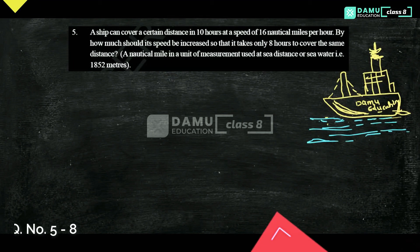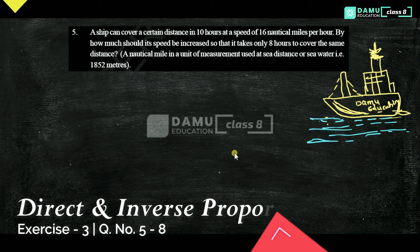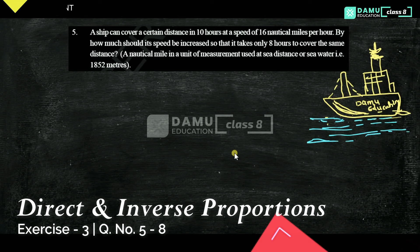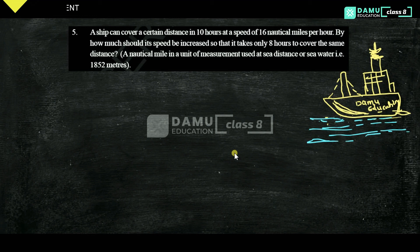Hello viewers, thanks for watching our videos. If you have not yet subscribed, please subscribe and hit the bell icon. So in this module, we are going to discuss the fifth question. A ship can cover a certain distance in 10 hours. At a speed of 16 nautical miles per hour, by how much should its speed be increased so that it can take only 8 hours to cover the same distance?